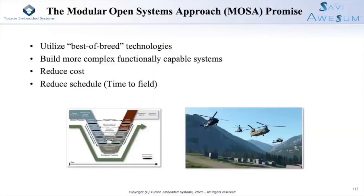What is the MOSA promise? It's really about utilizing the best-of-breed technologies and taking a divide-and-conquer approach to building a system, pulling from different components, integrating those, and being able to deploy that system. It helps us build a more complex, functionally capable system — the idea is we can bring these best-of-breed technologies together and enhance our overall system capability.